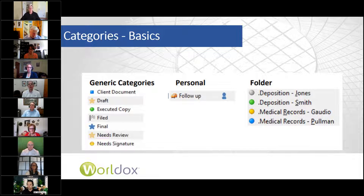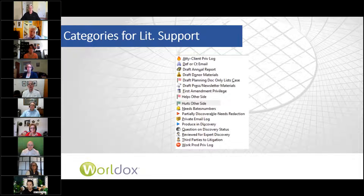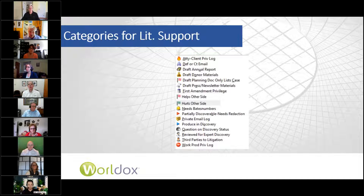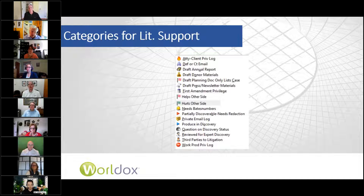One place that a lot of my litigation firm clients really love categories is using them for litigation support, to make WorldDocs into a sort of mini litigation support program. For example, you can have categories that say 'helps other side,' 'hurts other side,' 'privilege,' 'expert discovery,' 'question on discovery,' 'needs Bates numbers,' 'attorney privilege log,' and so forth. These would all be things that attach to different documents according to their status.